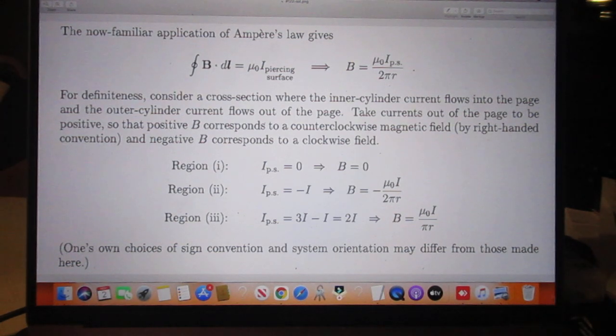Many books use a different term. They use currents surrounded by a closed-loop. That's nonsense. That's ill-defined. Piercing through a surface is uniquely defined.